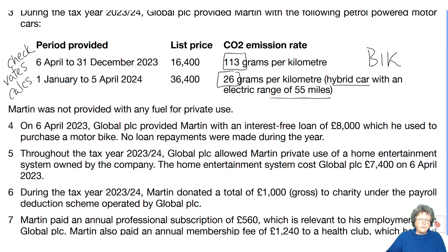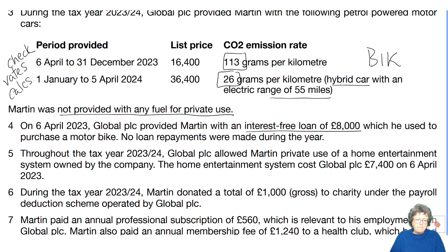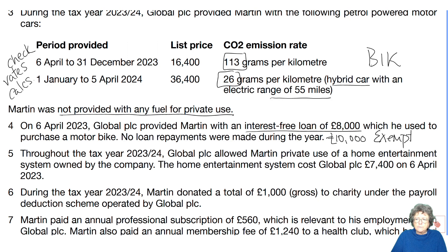He was not provided with any fuel — no fuel benefit. On 6th April they provided him with an interest-free loan of £8,000, which he used to buy a bike, with no repayments. The limit for that is £10,000, so it's below the limit — therefore it is exempt.